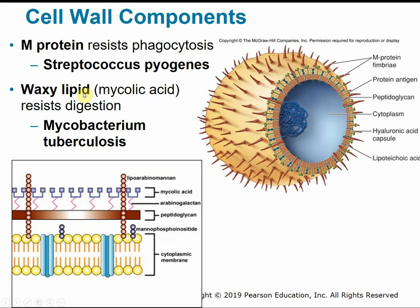Some cell walls may be composed of a waxy lipid called mycolic acid — the acid-fast bacteria we saw in lab, the mycobacterium. This waxy lipid cell wall helps resist digestion by immune cells. As we saw in lab, acid-fast bacteria and mycobacteria have their own special stain that penetrates through that thick, waxy mycolic acid.